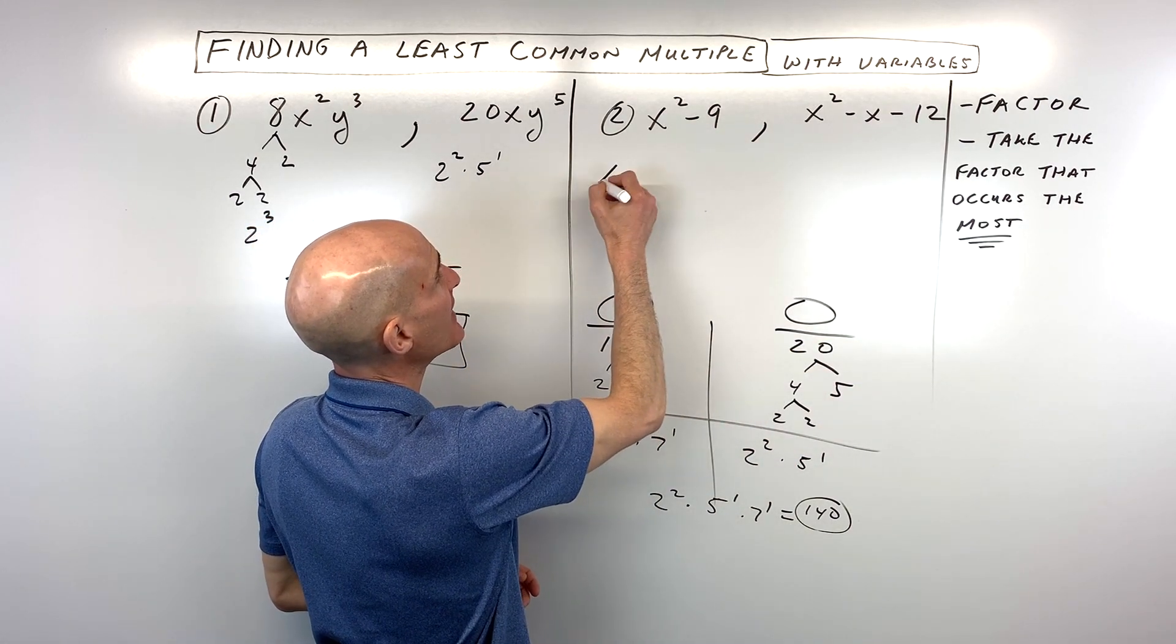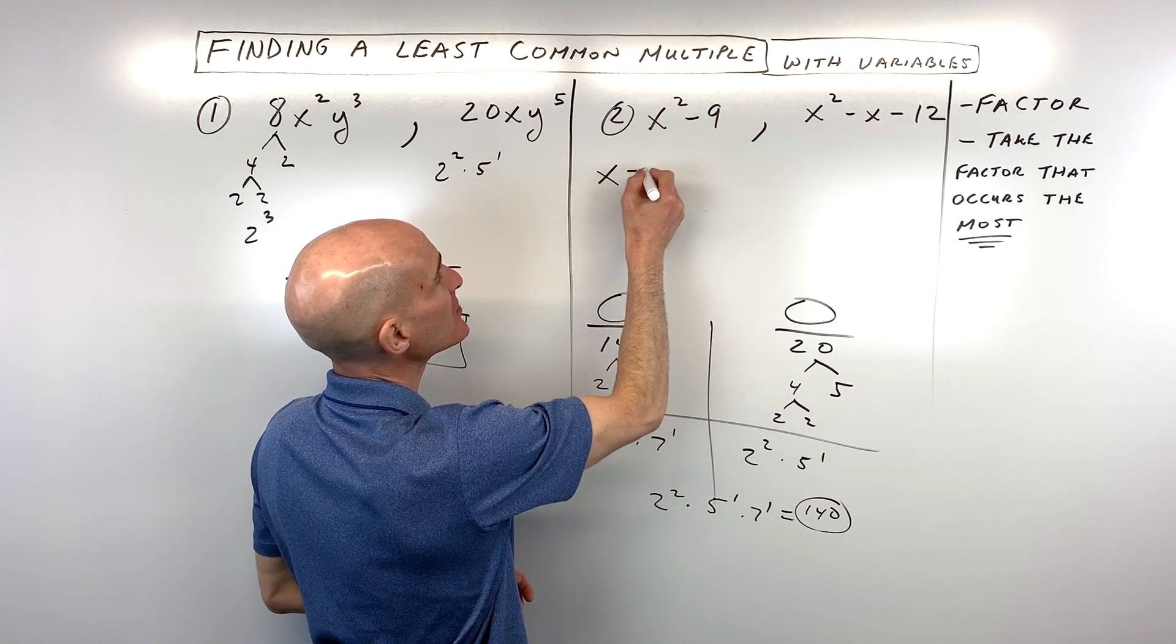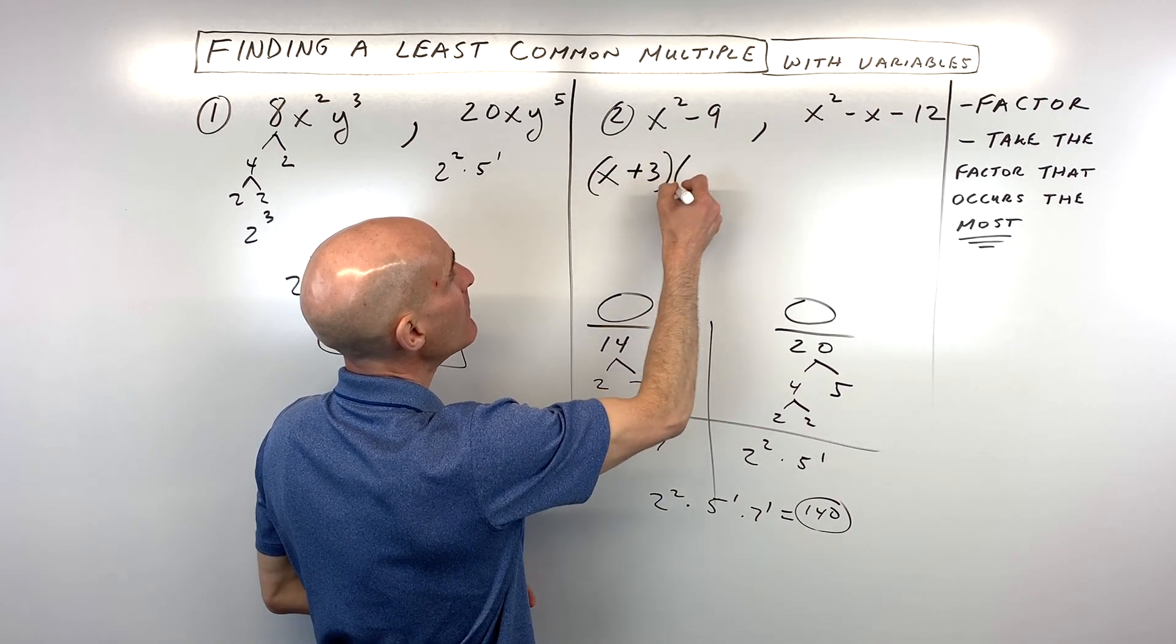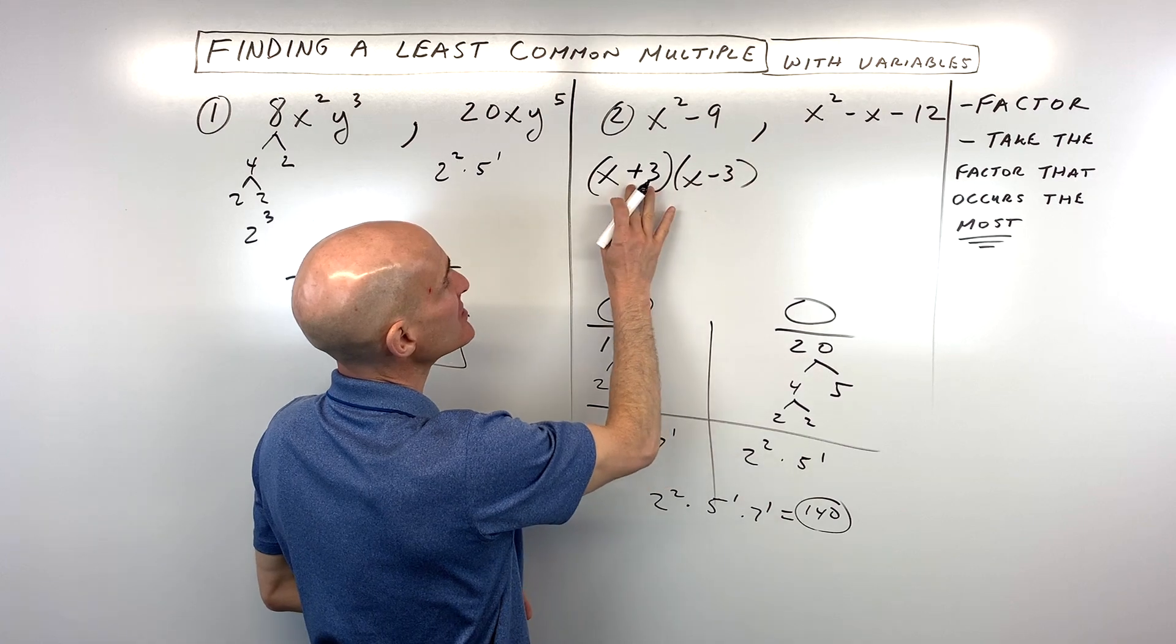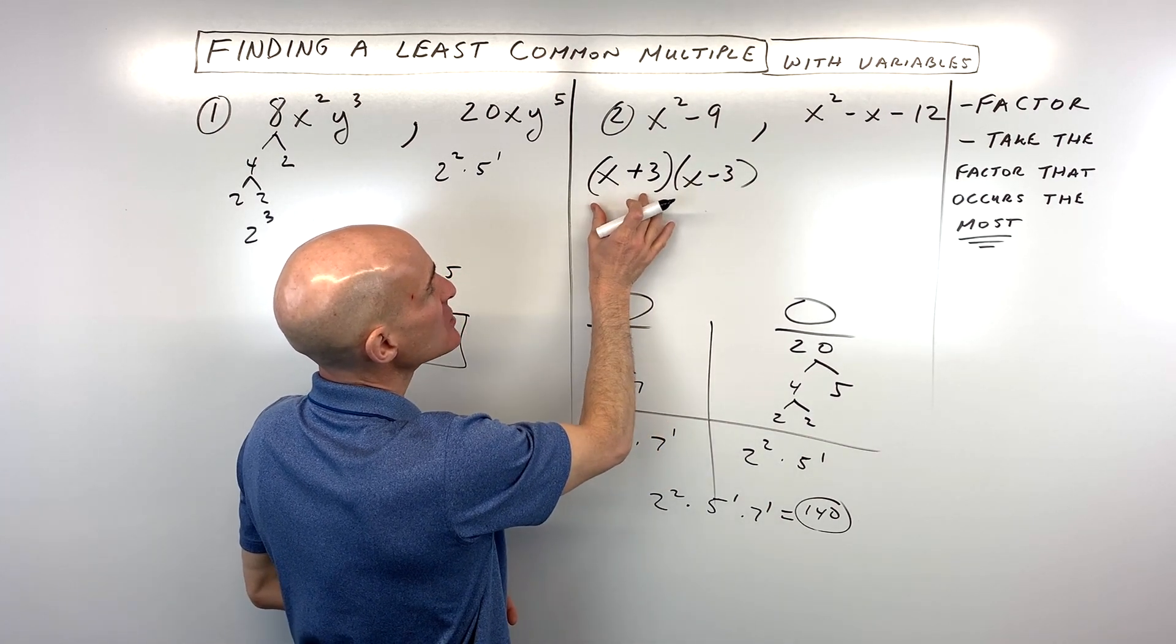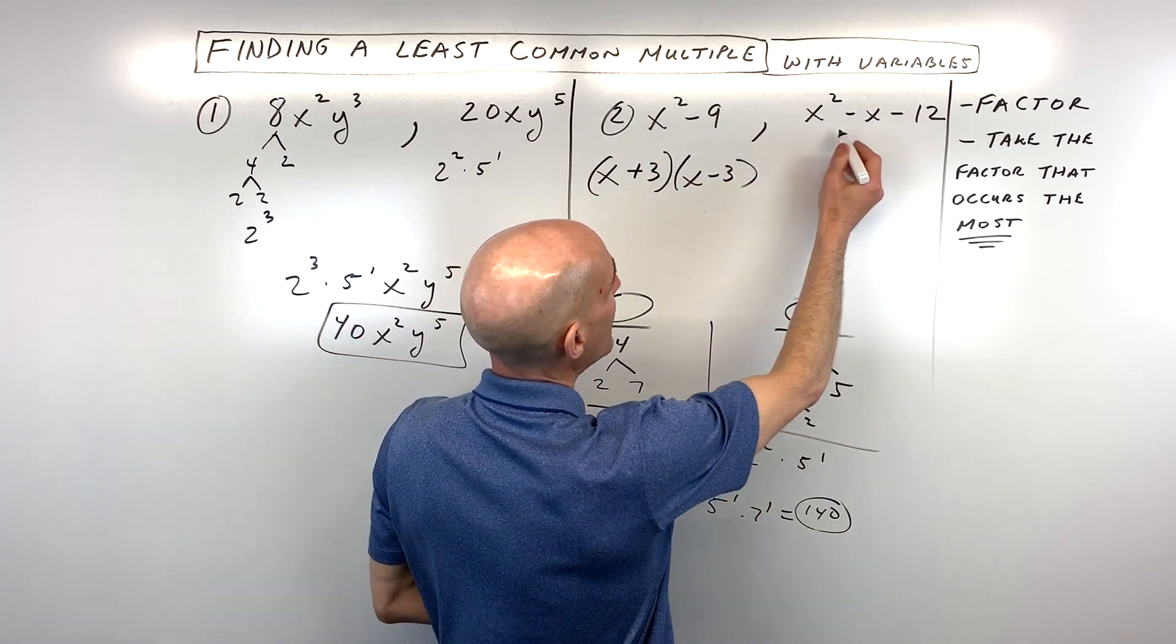So x squared minus 9, this is what's called a difference of two squares, and you can factor it as a sum and difference pattern. Sum is add, difference is subtract. So x plus 3 times x minus 3 gives us back x squared minus 9.